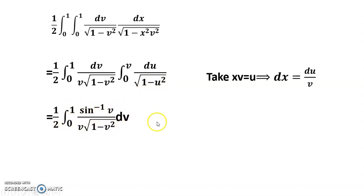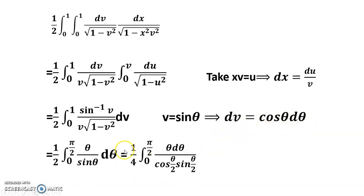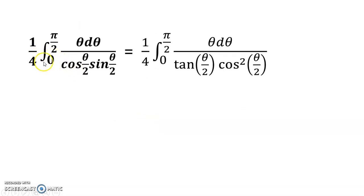Now taking v equals sin theta and dv equals cos theta d-theta, I get one-half times the integral from 0 to pi/2 of theta times sin theta d-theta. Using the identity sin theta equals 2 sin(theta/2) cos(theta/2), this becomes one-half times one-quarter times the integral from 0 to pi/2 of theta times cos(theta/2) sin(theta/2) d-theta. Dividing both sides by cos(theta/2), sin(theta/2) divided by cos(theta/2) equals tan(theta/2), giving one-quarter times the integral from 0 to pi/2 of theta times tan(theta/2) d-theta.